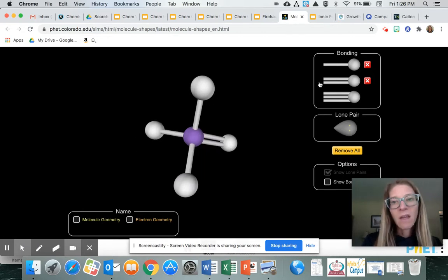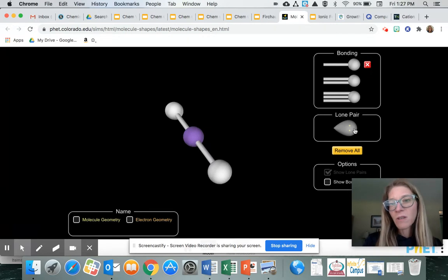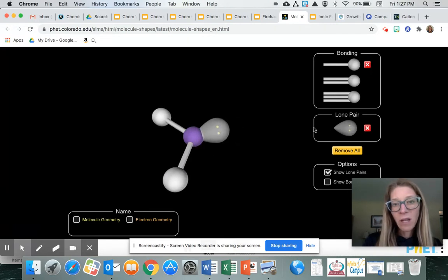When you want to get rid of a bond, you can just click on the X up here on the corner. You can also add a lone pair of electrons which also will adjust the shape.